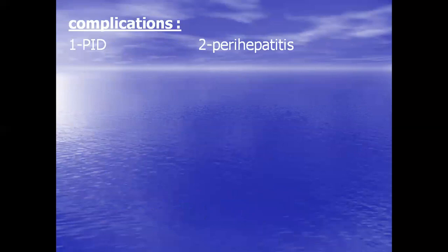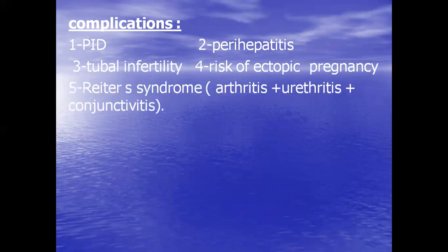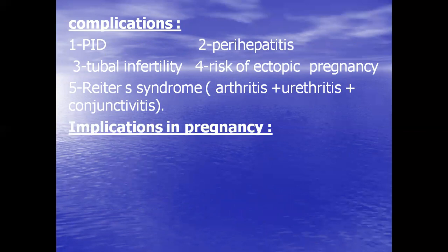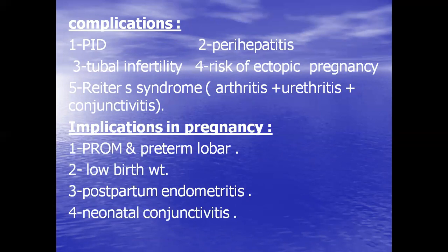Complications of chlamydial infection include PID, peri-hepatitis, tubal infertility, and risk of ectopic pregnancy. Reiter's syndrome includes arthritis, urethritis, and conjunctivitis. Implications in pregnancy include premature rupture of membranes, preterm labor, low birth weight, postpartum endometritis, and in the neonate: conjunctivitis and neonatal pneumonia.